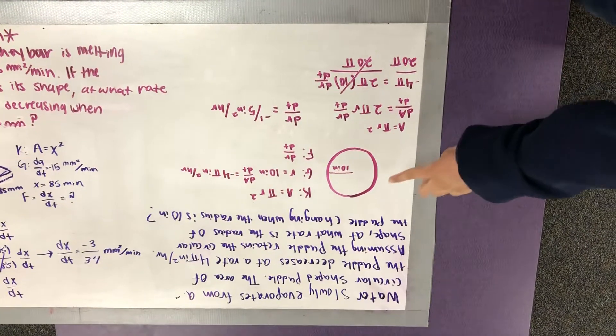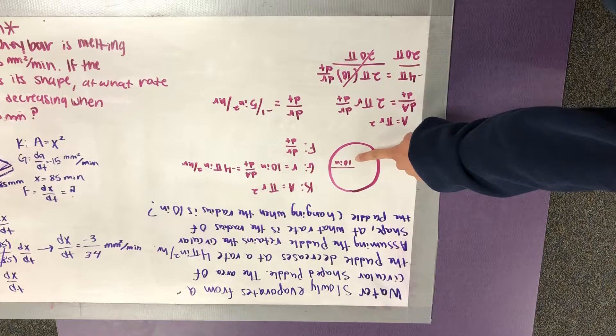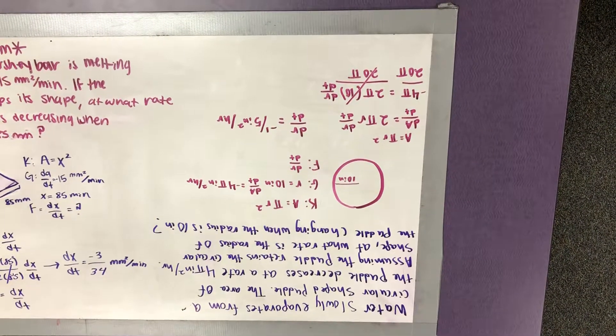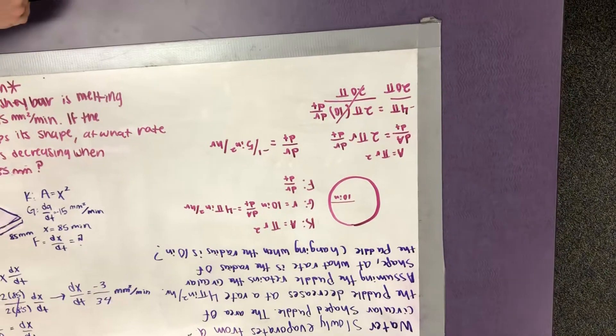And here is our puddle. And as you can see, the radius is 10 inches, and it is evaporating. So our known equation is A equals pi r squared, which is the area of a circle.